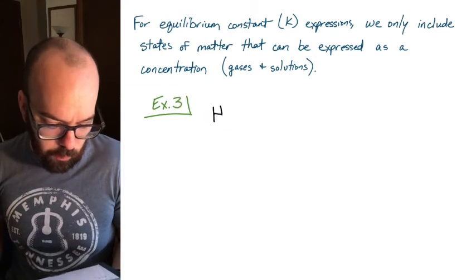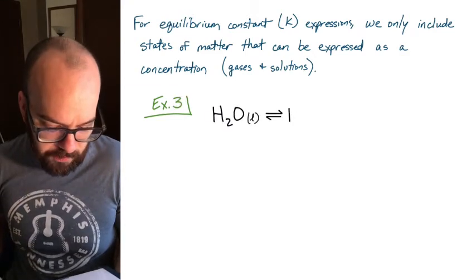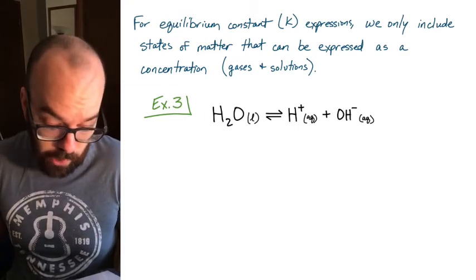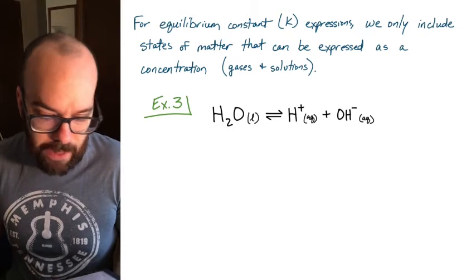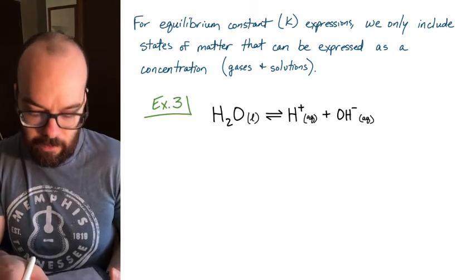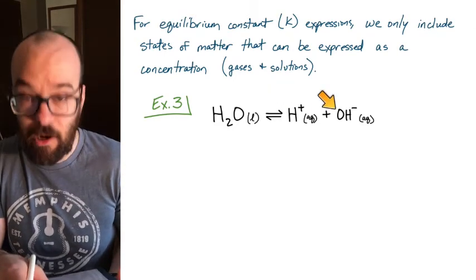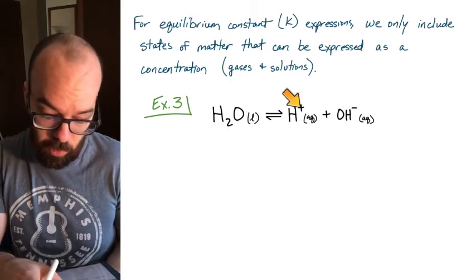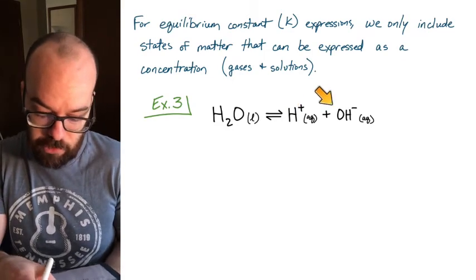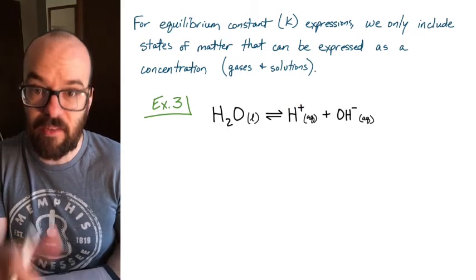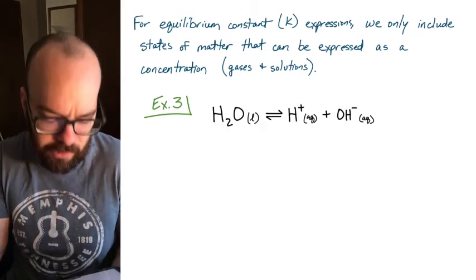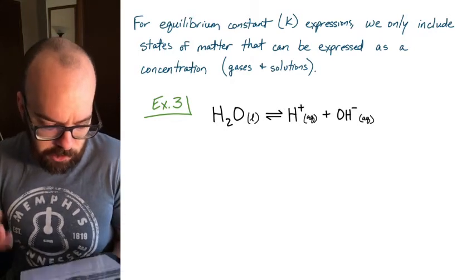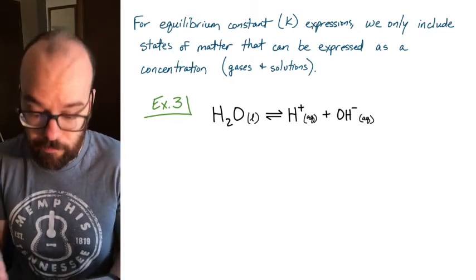Let's look at one more example. Here we have liquid H₂O, or water, which can break down into hydrogen ions and hydroxide ions. Water actually does this, producing a small amount of hydrogen and hydroxide ions — that's where our pH scale and acidity come from. Let's write the equilibrium constant expression for this reaction.